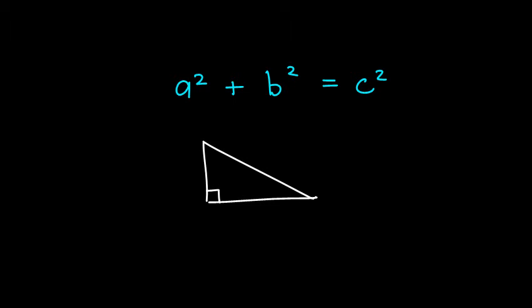A right triangle with one leg of length a, and another leg of length b, and then the hypotenuse of length c.